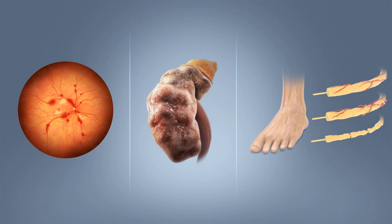All forms of diabetes increase the risk of long-term complications. These typically develop after many years, 10 to 20, but may be the first symptom in those who have otherwise not received a diagnosis before that time. The major long-term complications relate to damage to blood vessels. Diabetes doubles the risk of cardiovascular disease and about 75% of deaths in diabetics are due to coronary artery disease. Other macrovascular diseases include stroke and peripheral artery disease. The primary complications of diabetes due to damage in small blood vessels include damage to the eyes, kidneys, and nerves.